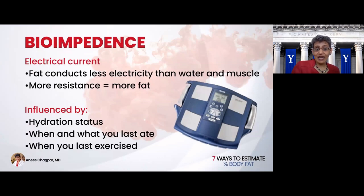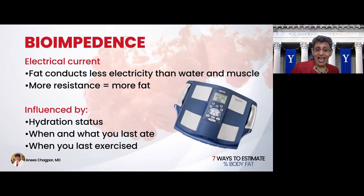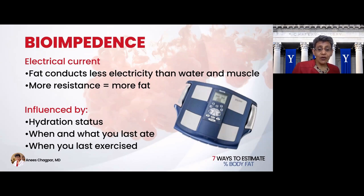If you want to move up from there, many of us will have a bioimpedance bathroom scale. These days, there are even cheaper bioimpedance scales that link right to your smartphone. The way these bioimpedance scales work is with the concept that fat conducts less electricity than muscle — so the more resistance you have, the more fat. This is also influenced by your hydration status, when and what you last ate, whether or not you exercised, and whether or not you went to the bathroom. Nonetheless, it still gives you a reasonable estimate of your percent body fat.